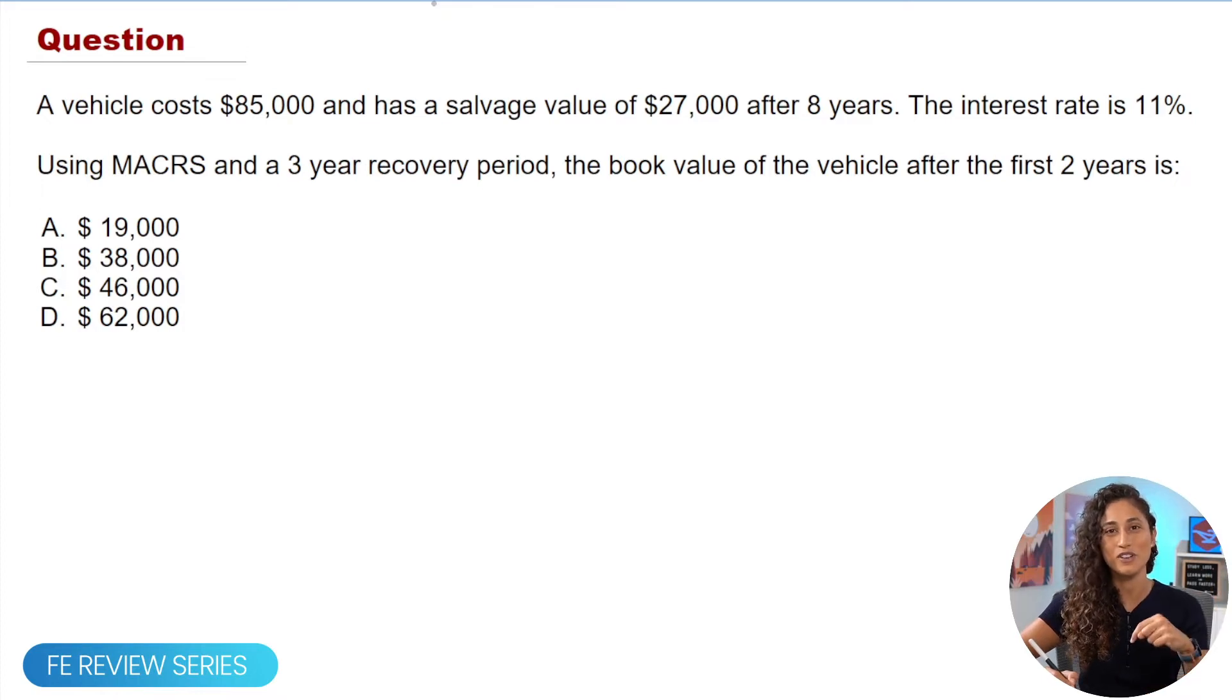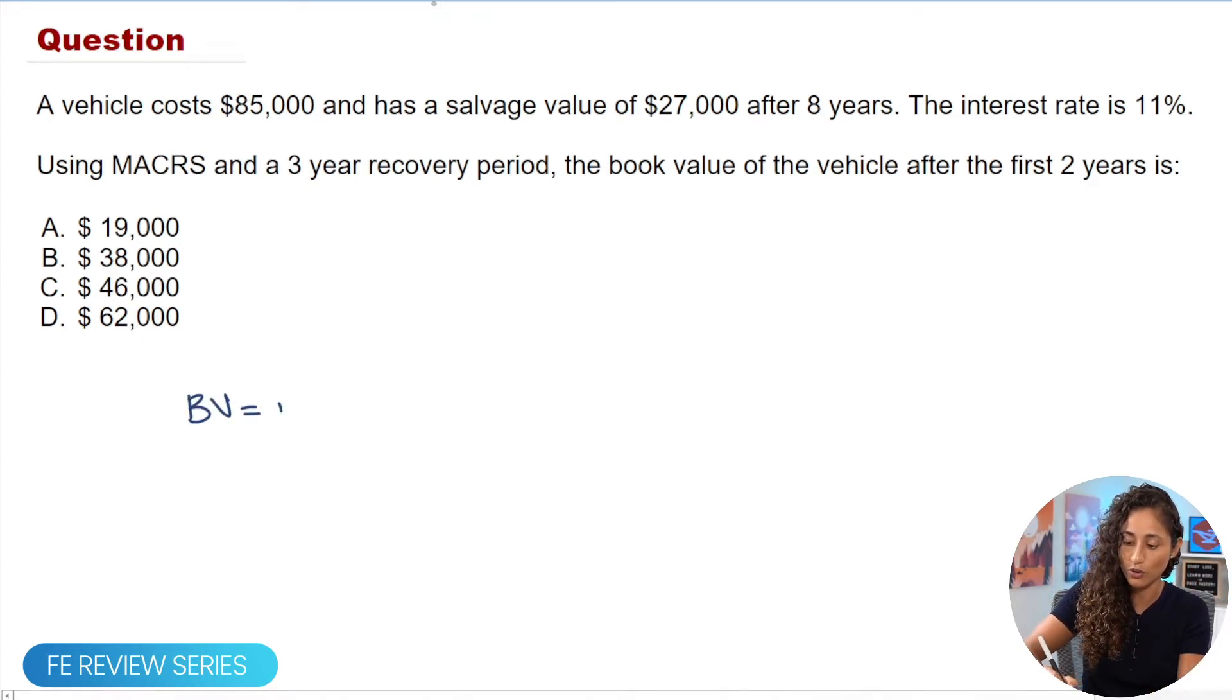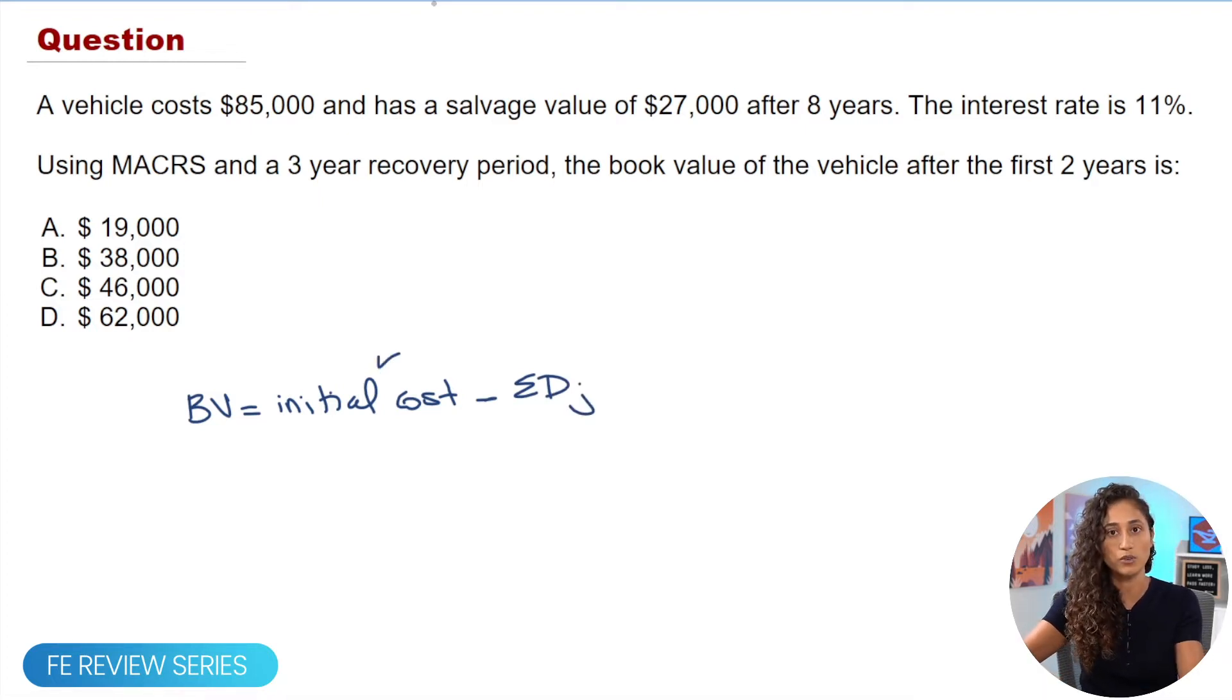Did you solve it? Let me know what you got in the comment section. The first thing we got to do is just write the equation down, so that way we know exactly what we need to solve for. We have the book value is going to be equal to the initial cost minus the depreciation. The initial cost was actually given to us already, which is $85,000. That's the initial cost of the car.